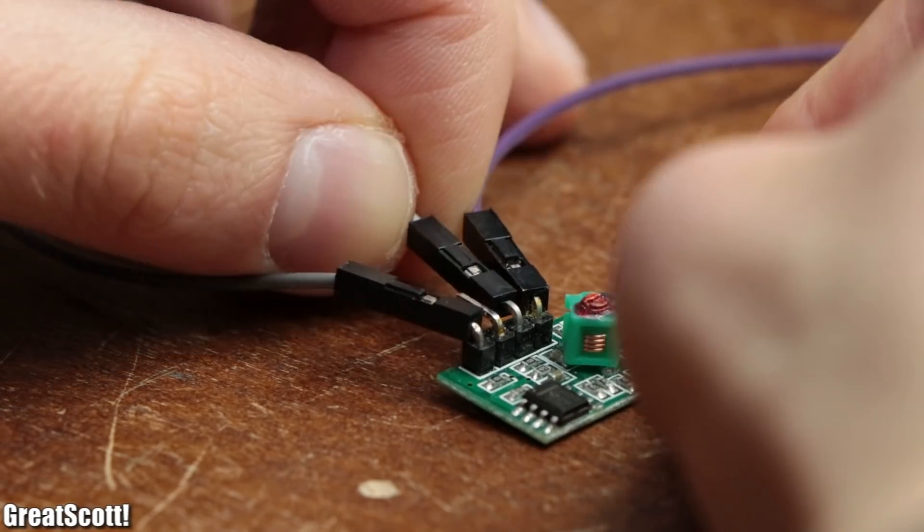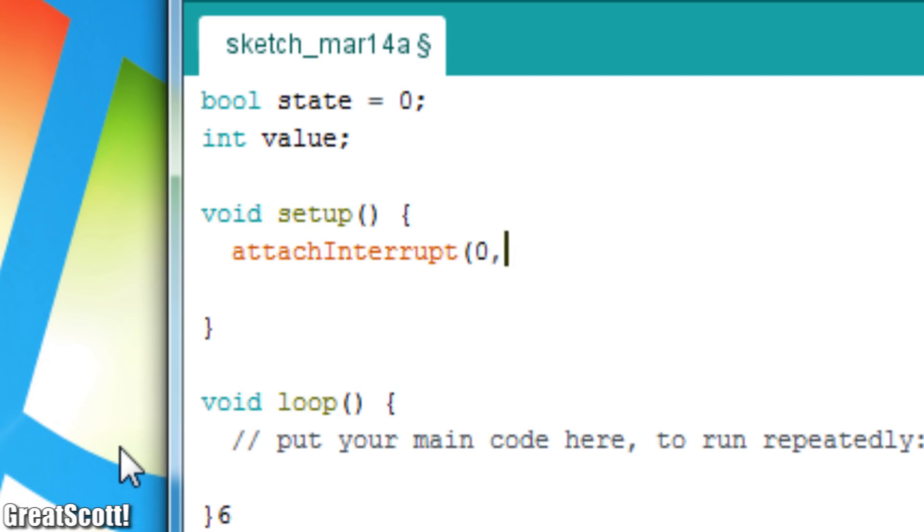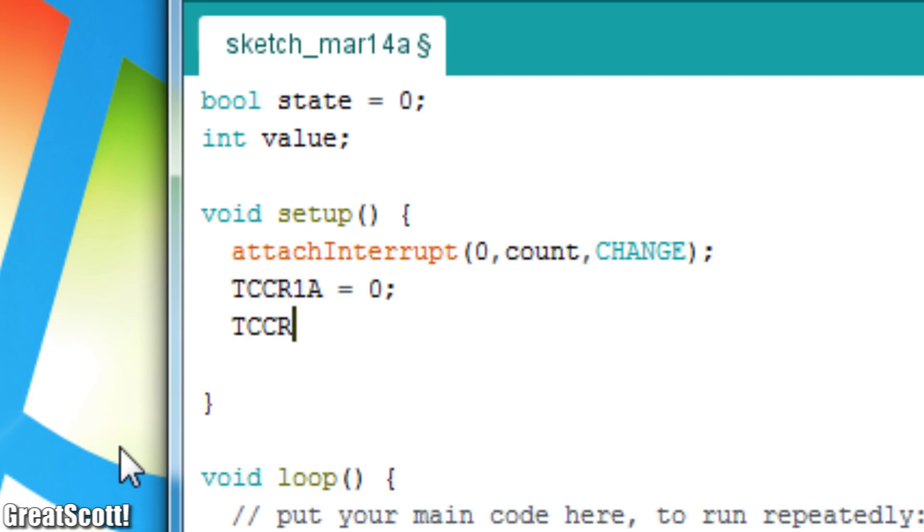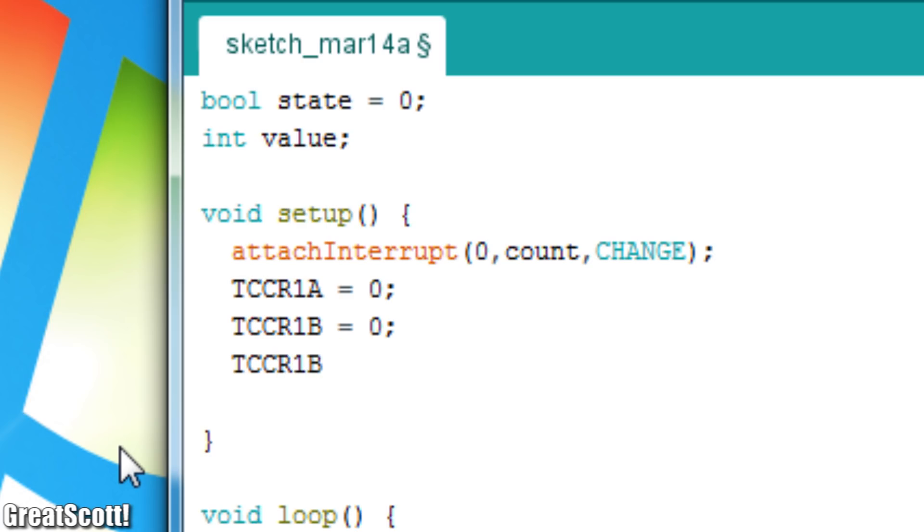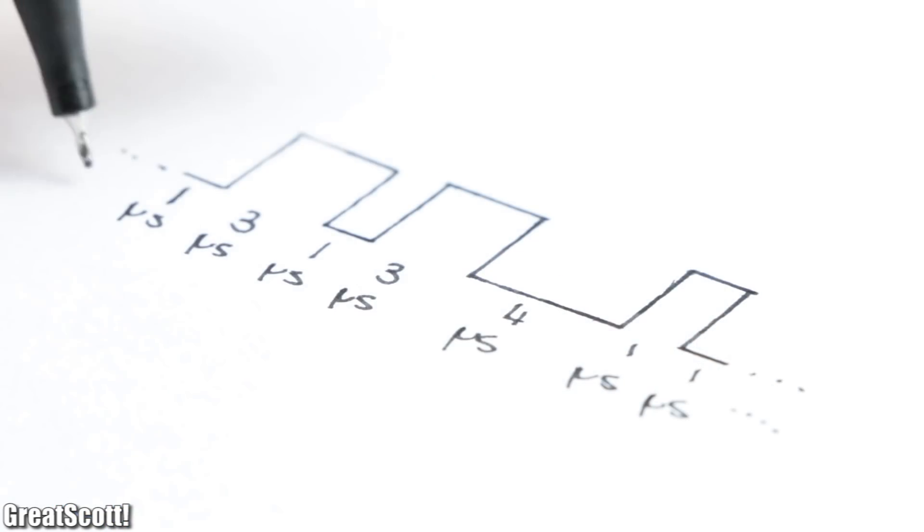So I connected the data pin to pin 2 of an Arduino Nano and started writing code so that the microcontroller uses its external interrupts to start a timer when the state of the data signal changes while saving the on/off times of the received signal.